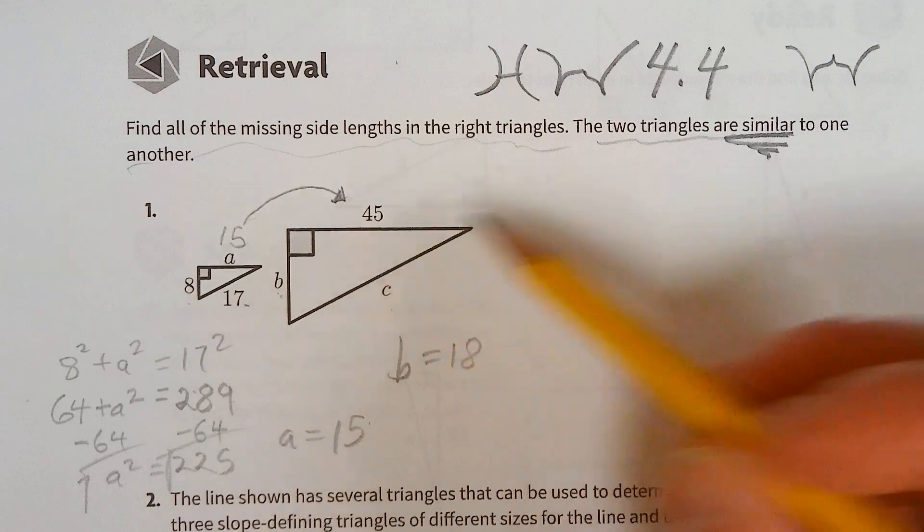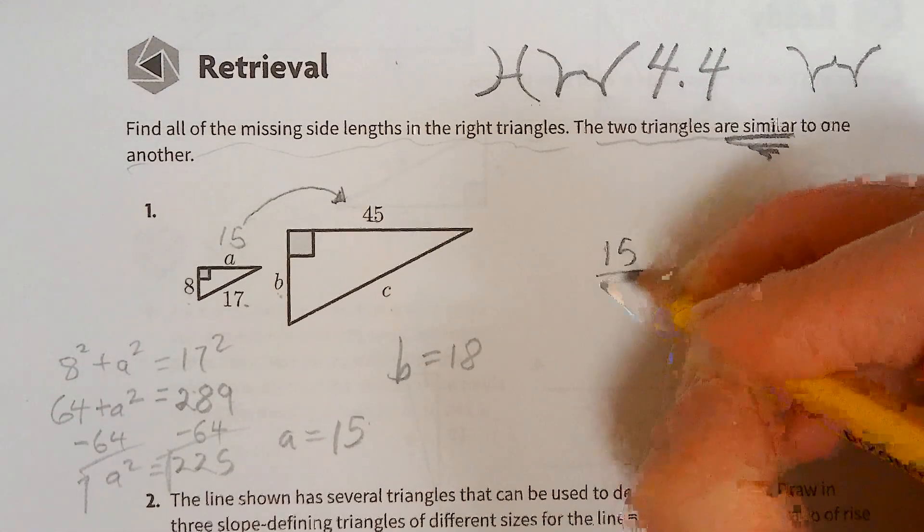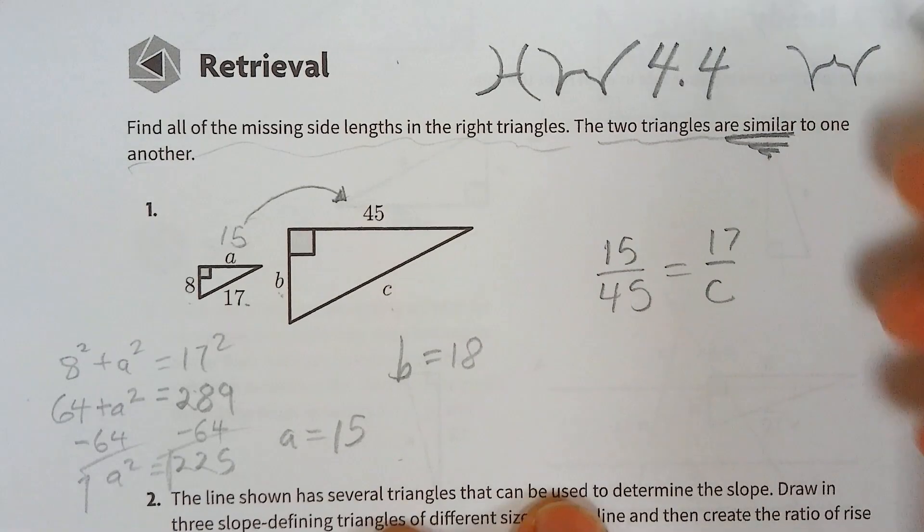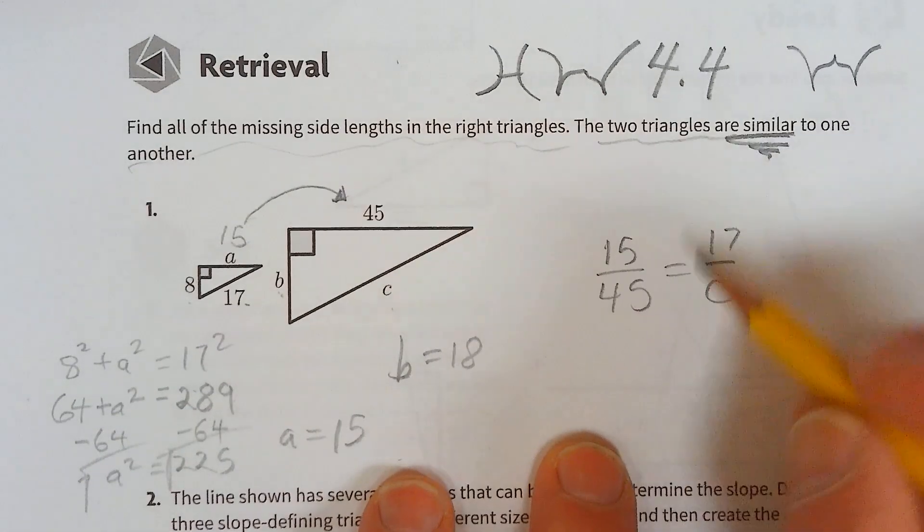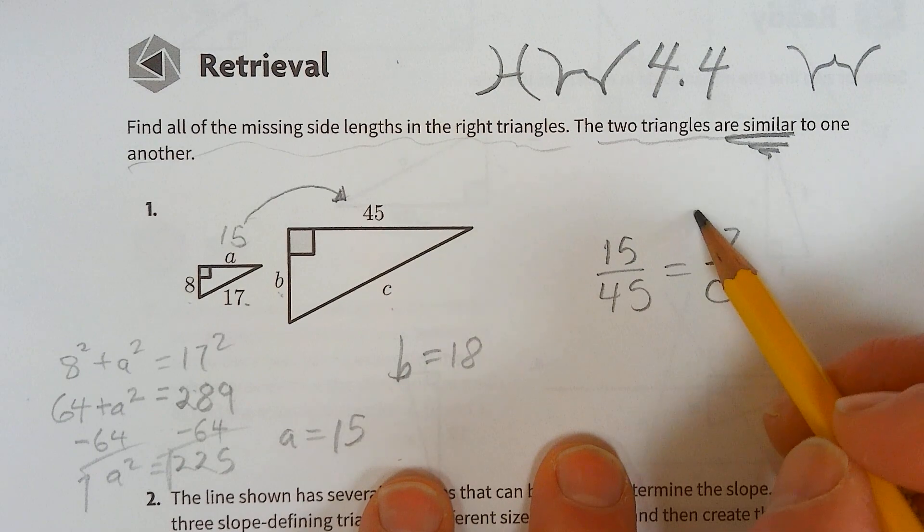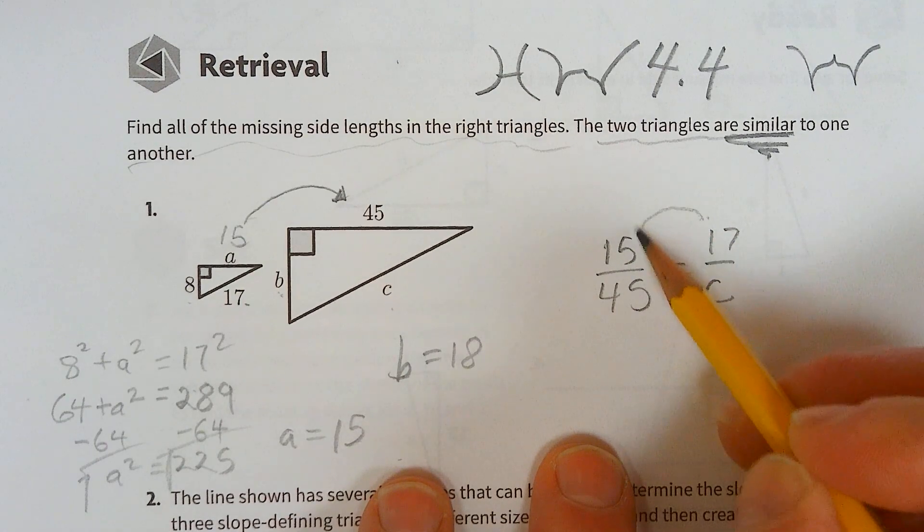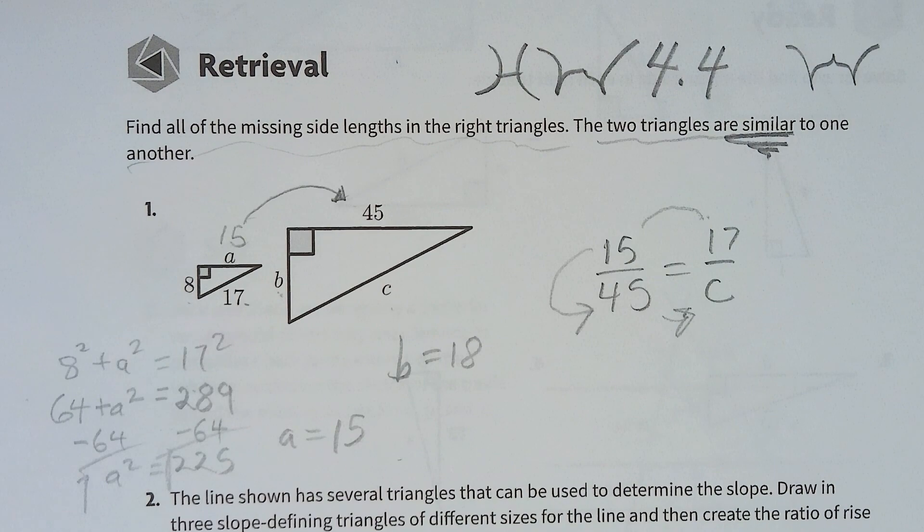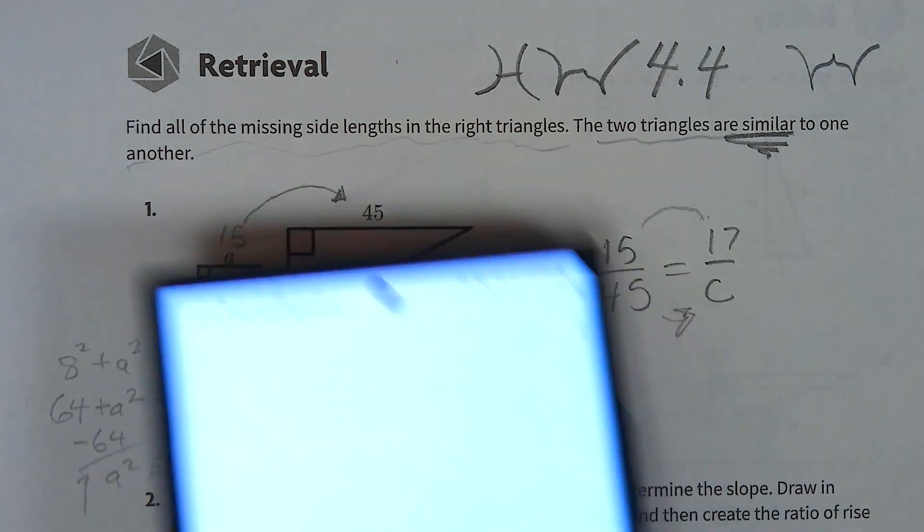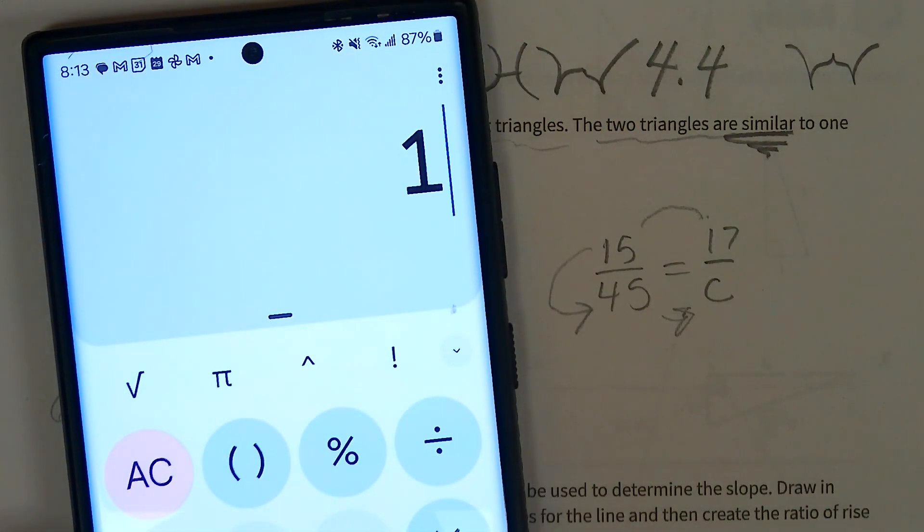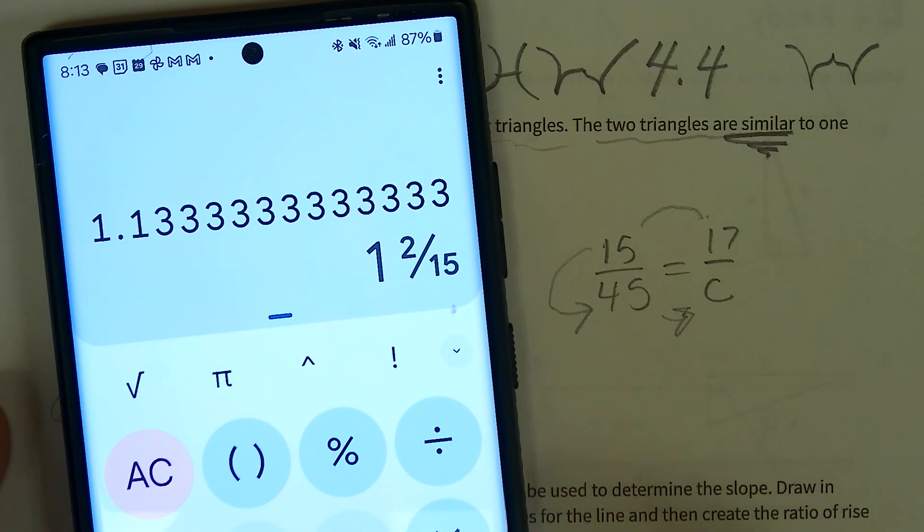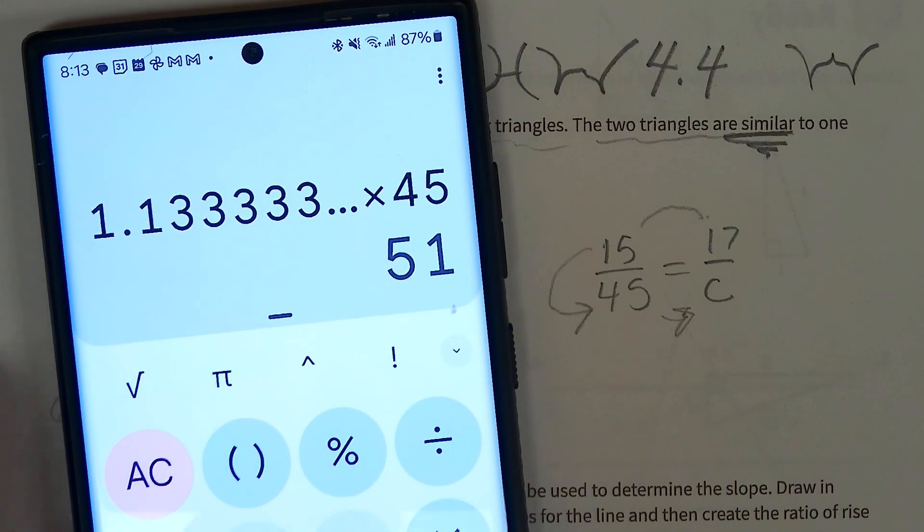Let's set one up: 15 compared to 45 equals 17 compared to c. So we have to do 17 divided by 15, then times that by 45, and that'll give us c. This was not the smart way to set it up - I'll show you in a minute the better way. But for now, 17 divided by 15 is 1.133 repeating, multiply that by 45 to get 51.